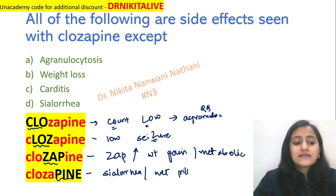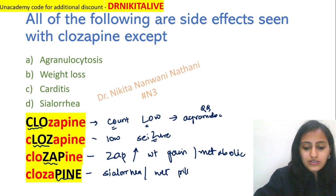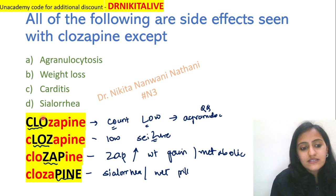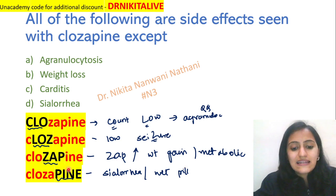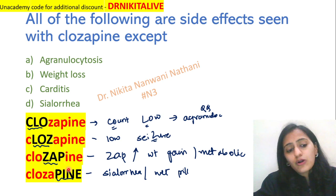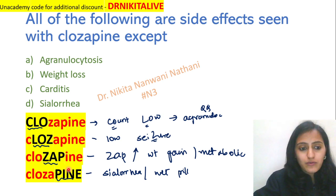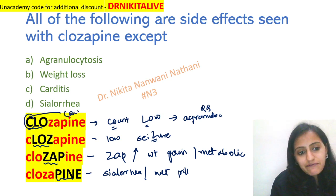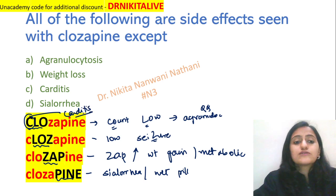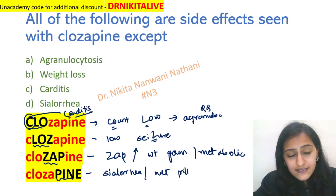So to summarize: counts low (agranulocytosis), lower seizure threshold, Zap — weight gain, and 'peene' — sialorrhea or wet pillow syndrome. Also remember the first letter C — C for carditis. Clozapine also causes carditis.